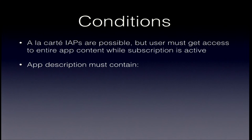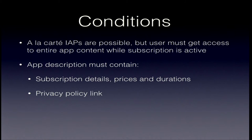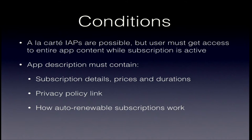The app description on iTunes must contain certain things: the subscription details, prices and durations of the subscriptions you offer. It must contain a link to the privacy policy — and it's not enough to have the link at the bottom of iTunes; they want you to put it a second time in the text. You also have to include a lengthy text, which Apple provides and you can copy-paste, explaining how auto-renewable subscriptions actually work.